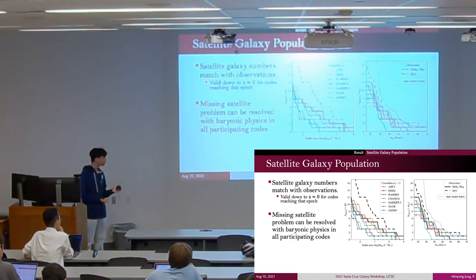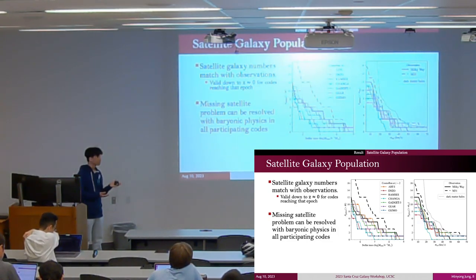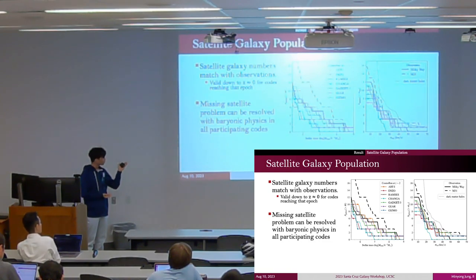We compare this result with present-day observations. Of course, we are comparing two data with completely different redshift epochs, but we can see that satellite galaxy population is quite well matched with the observational data.